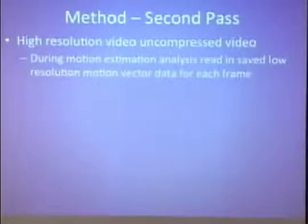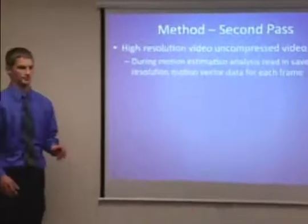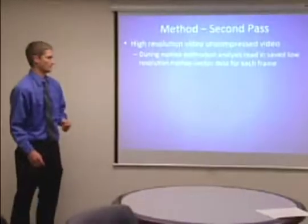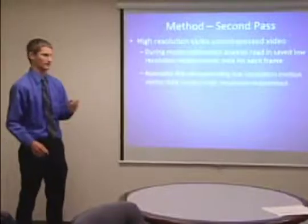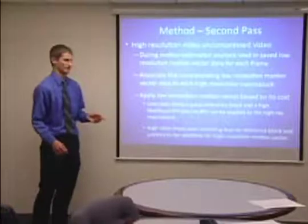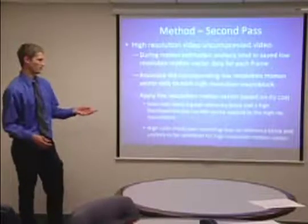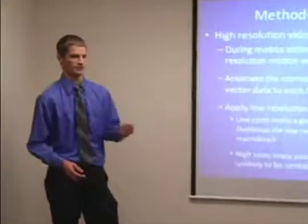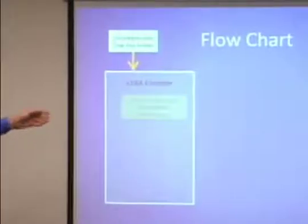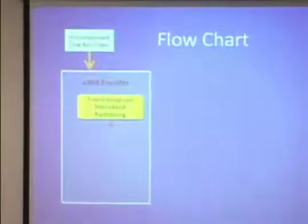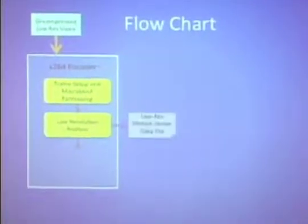In the second pass we use the high-resolution video, and during motion estimation we read in the data saved from the first pass. We need to correlate those low-resolution motion vectors from the first pass to the current macro block in the second pass, and then make a decision about how to apply those motion vectors. If the cost is low, a good reference was found on the low resolution, so we can probably use it in the high resolution. If the cost is high, a poor matching reference block was found, so it's unlikely we can apply that to the high-resolution pass.